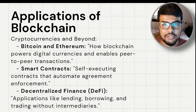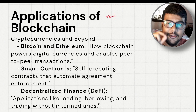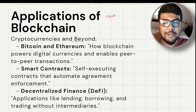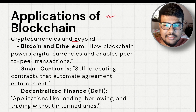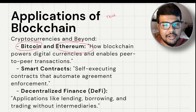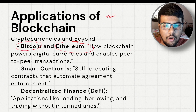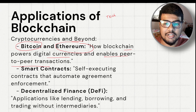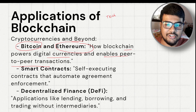Now let's talk about the applications of blockchain. Cryptocurrencies and beyond: Bitcoin is the classic cryptocurrency, and Ethereum has a computer embedded into it. Blockchain powers digital currencies and enables peer-to-peer transactions. Bitcoin and Ethereum are classic examples of peer-to-peer transactions.